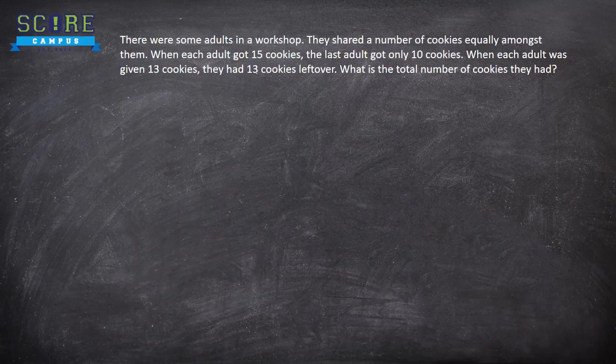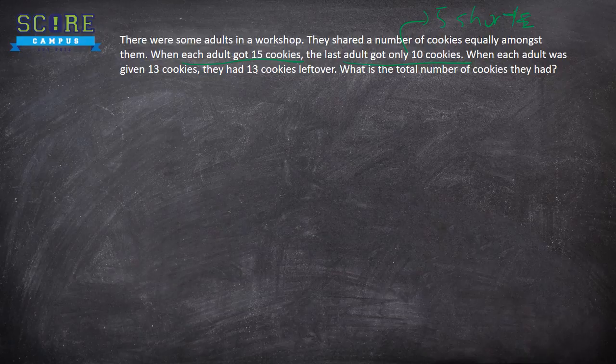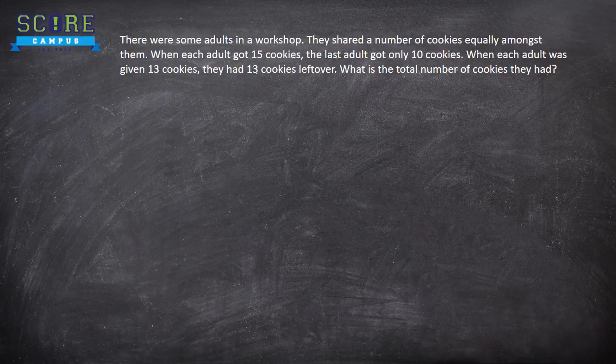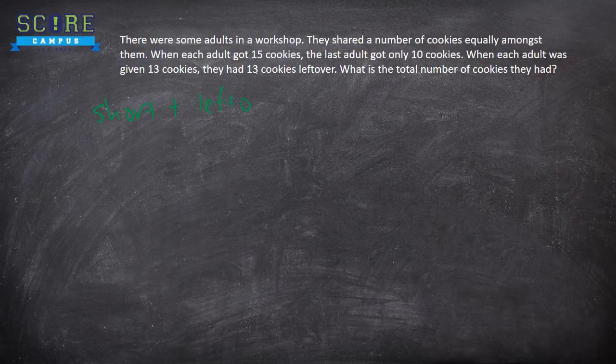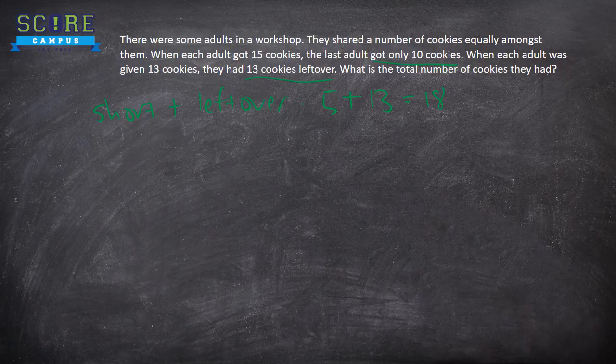So let's do this. If each adult got 15 cookies, the last one only got 10 cookies, that means they were 5 short. So remember the first step we said the short plus leftover, which will mean here will be 5 plus 13. 5 from here, 13 from here equals to 18.